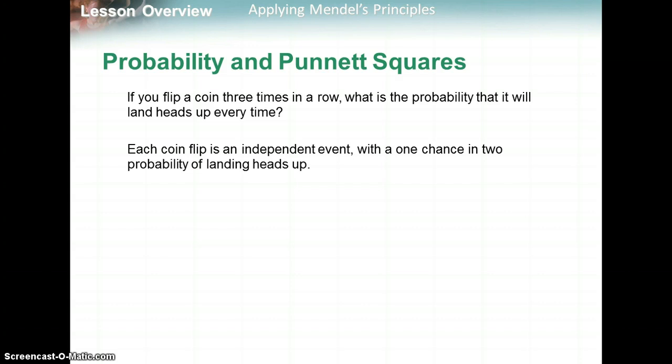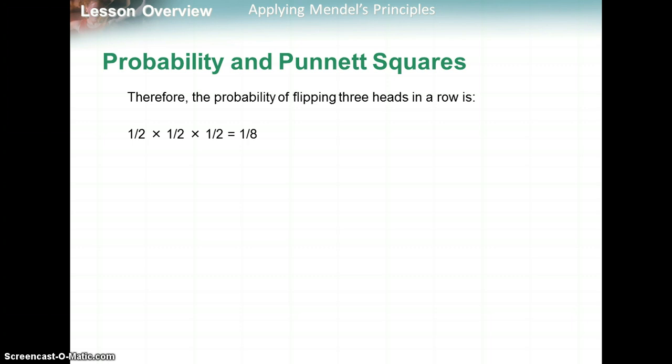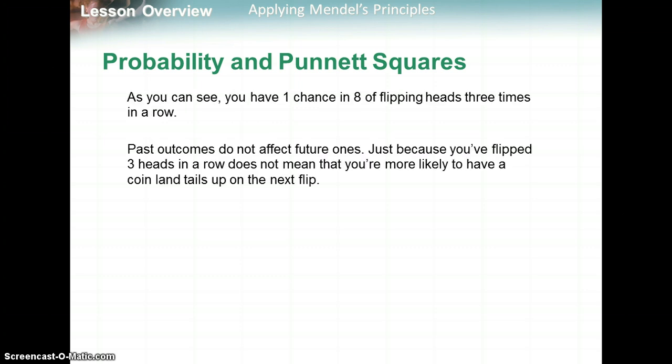If you flip a coin three times in a row, what's the probability that it'll land heads up every time? Each coin flip is an independent event, meaning your first flip is not going to affect the second flip. Therefore, the probability of flipping three heads would be one half times one half times one half, giving you a one in eight chance.